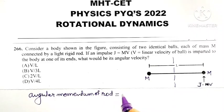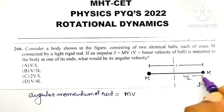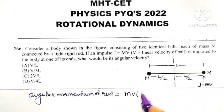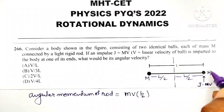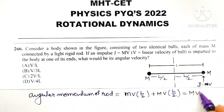Angular momentum is MV times R, where the distance is L by 2. So MV into L by 2, plus the angular momentum of the second particle, which is also MV into L by 2. This becomes equal to MVL. This is equation number 1.